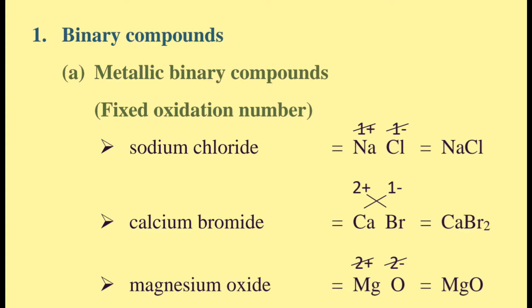2 plus and 1 minus — we cross the numbers. Bromide subscript is 2. The formula is CaBr2.